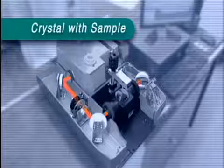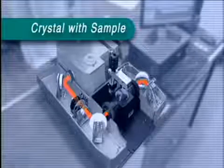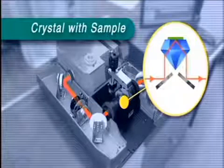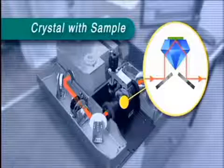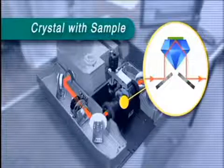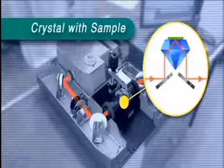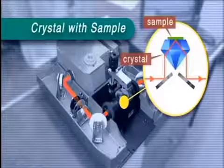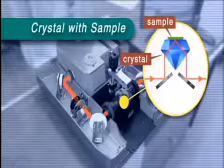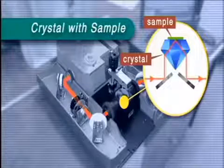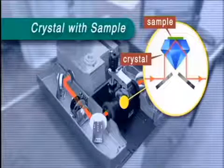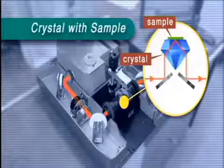This is the sample holder. The sample is placed here on a crystal which is made of diamond or germanium. The IR beam is directed into the sample by a mirror. It is reflected back from the upper surface of the sample, before being guided into the detector by a second mirror. This method is called attenuated total reflection, or ATR.